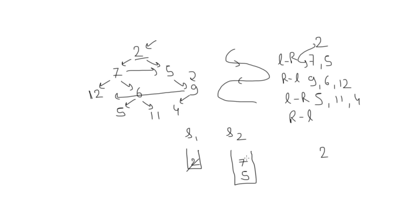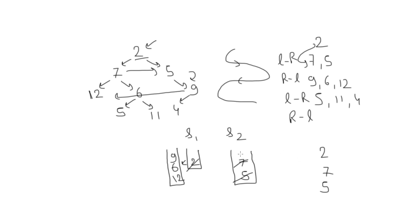Now this stack is empty, so I will remove elements from the next stack, but here I will check left first instead of right. I remove 7, print it, check if it has any left — yes it does, so push it. It has any right — yes, push it too. Then I remove 5, print 5, check: 5 doesn't have any left but has right, so I add 9 here.